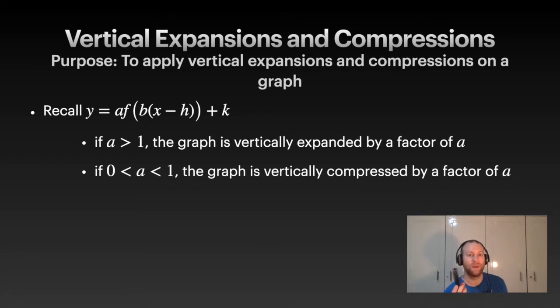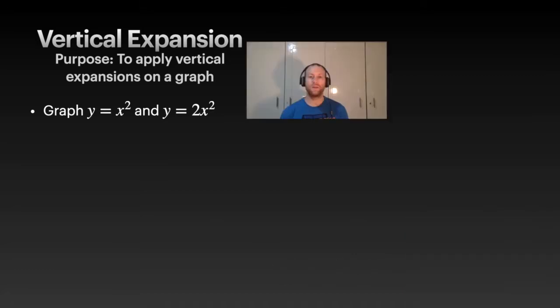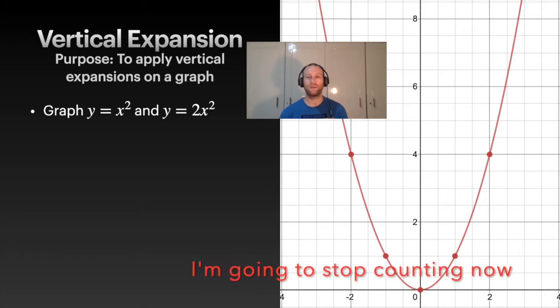Now, you might be thinking, hey mister, what happens if a is less than 0? Because that's not included in this. Well, think the last lesson. If a is negative we would just have a reflection. So you deal with the reflection and then deal with it in this. Let's give this a try. We want to graph x squared and y equals 2x squared. x squared, you should know how to do this. That should be in your brain.